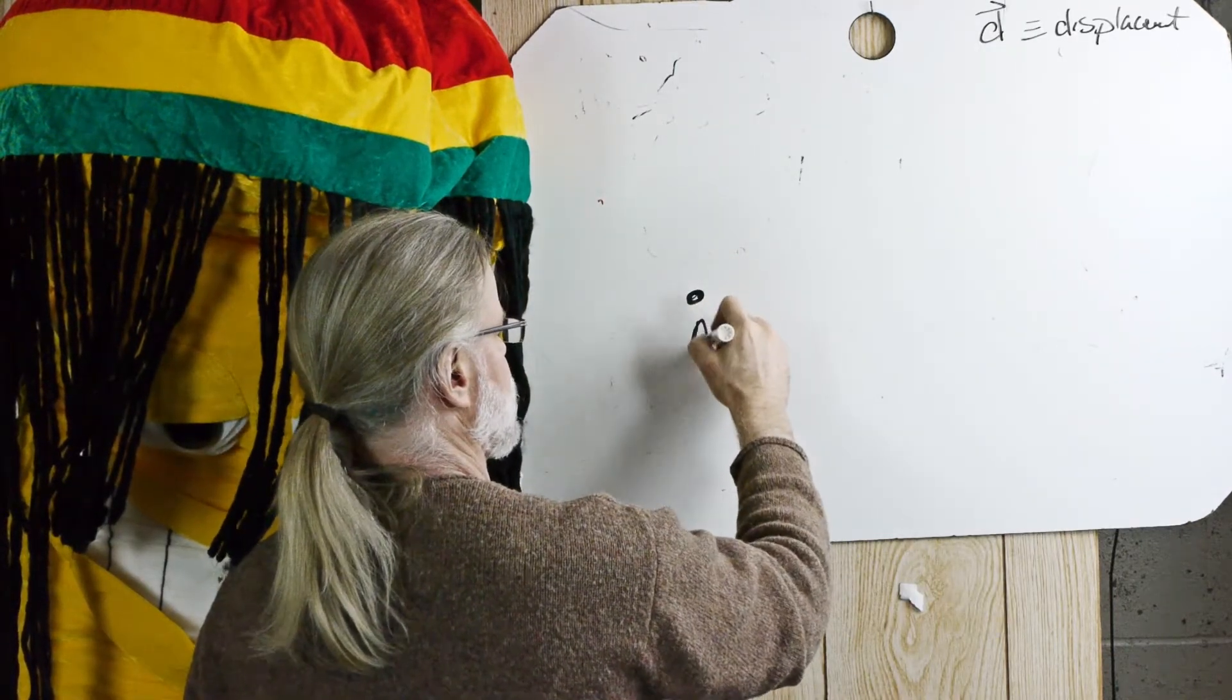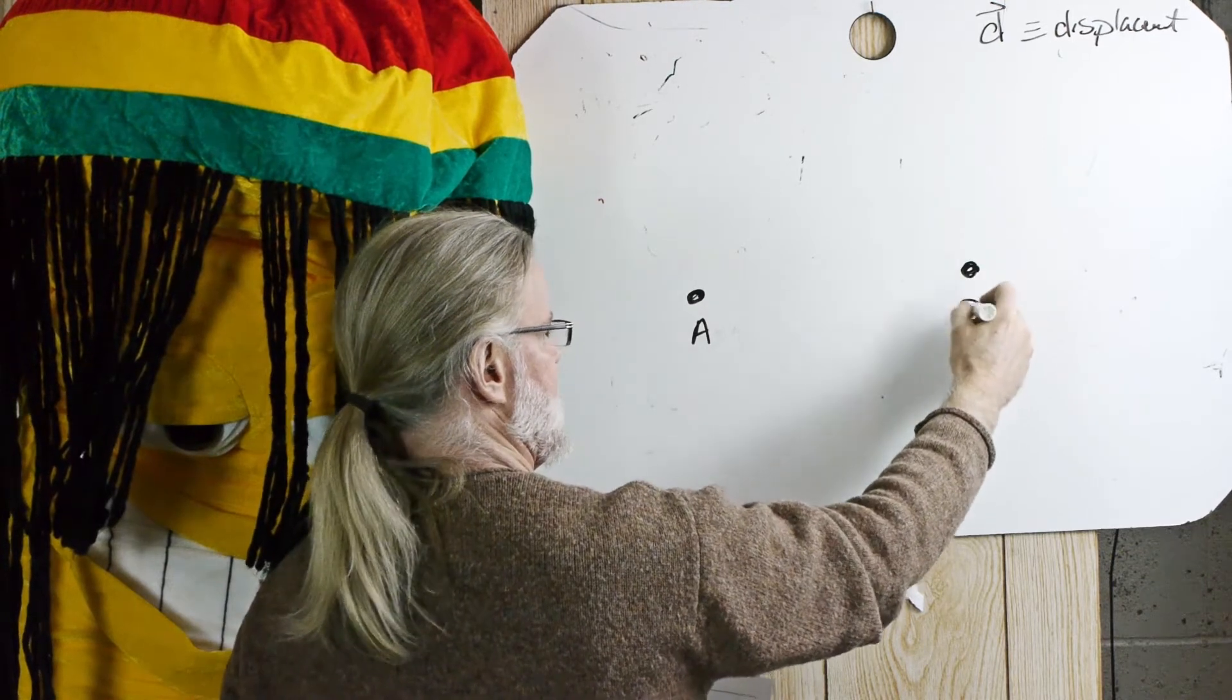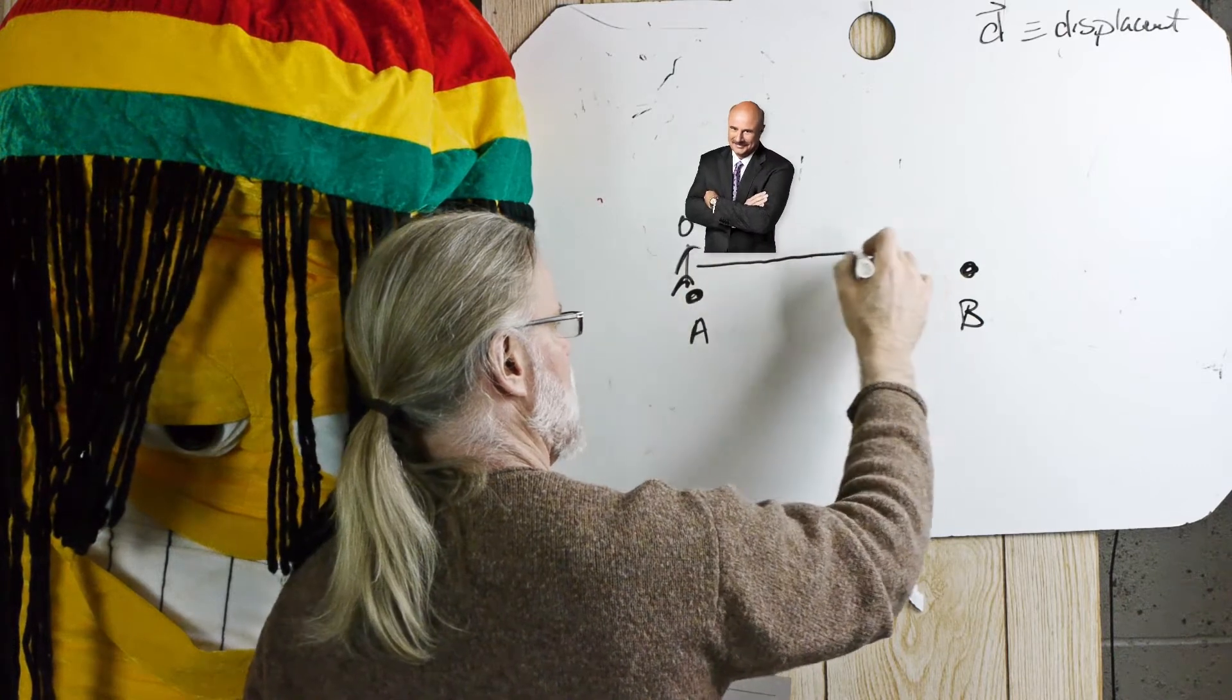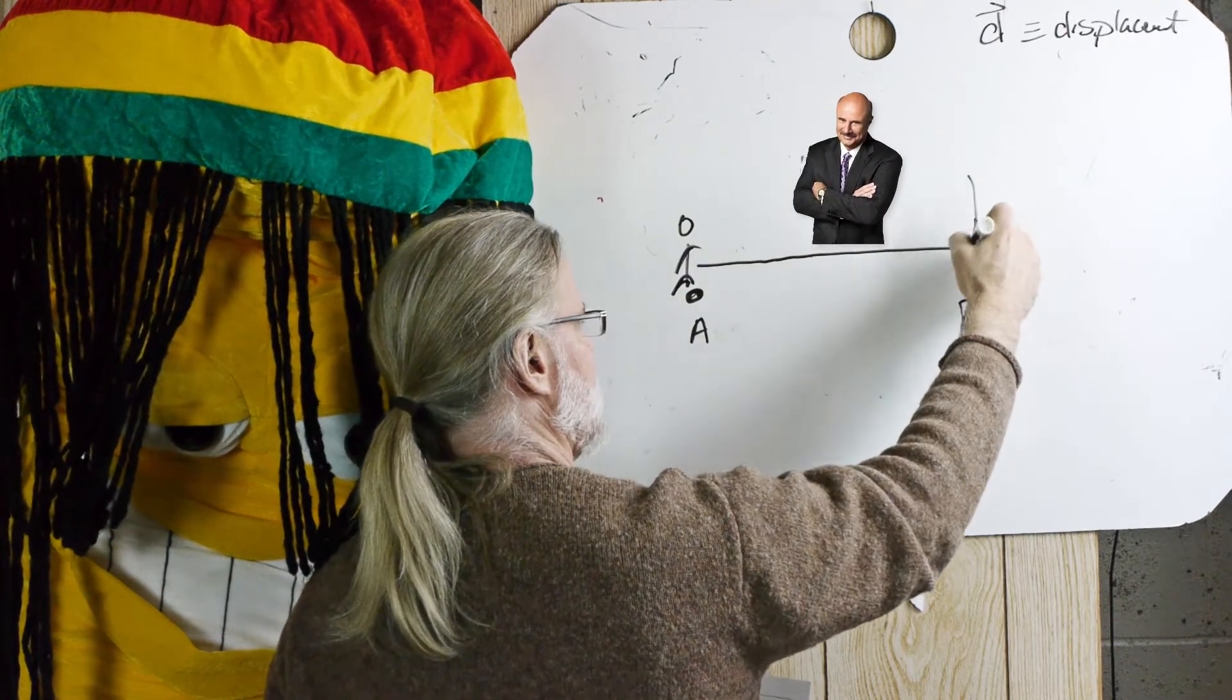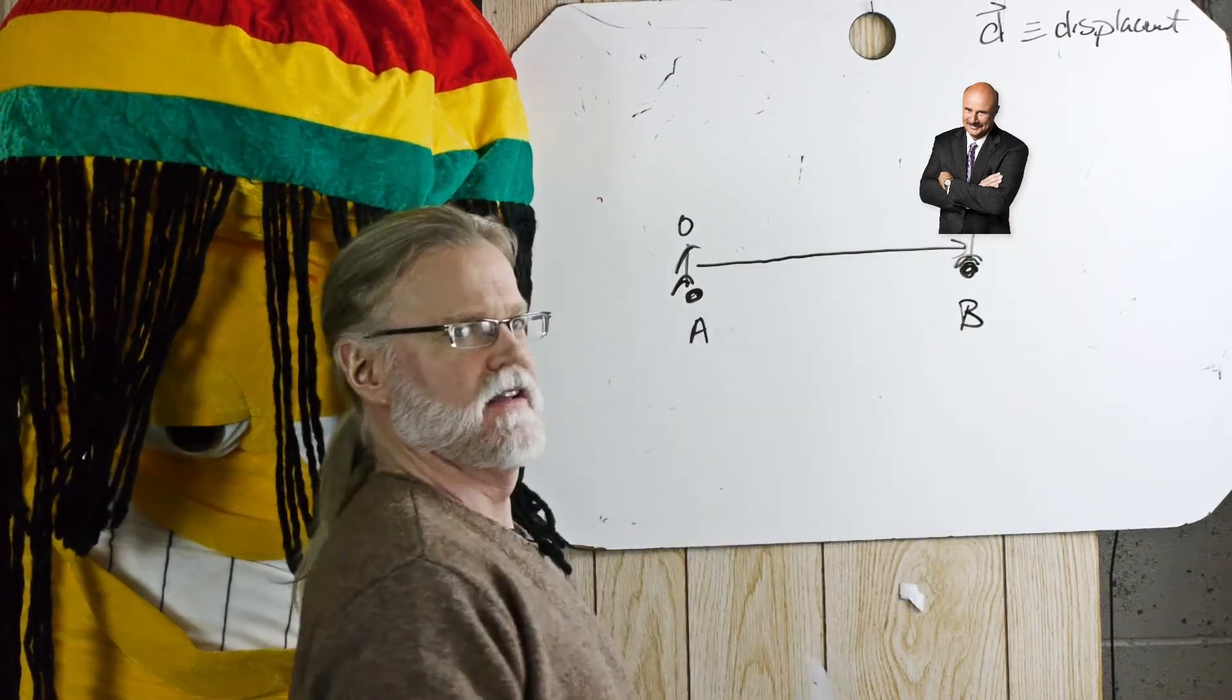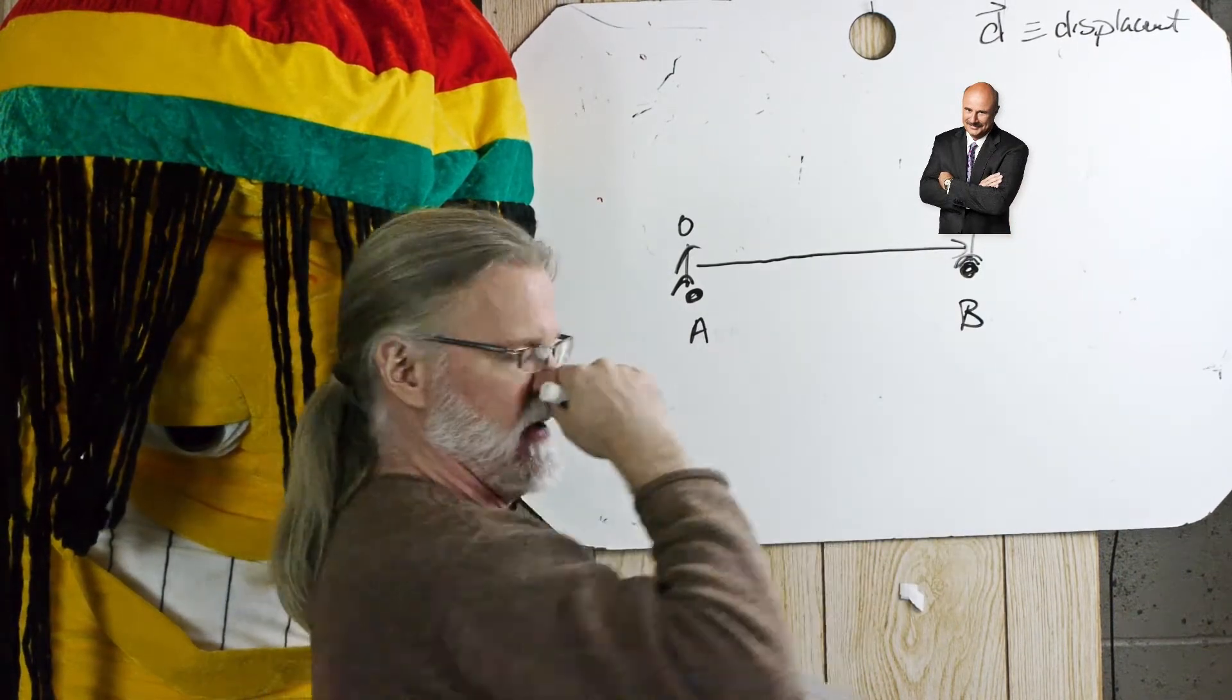Phil goes from A to B. Phil starts here, and Phil walks out over here and ends here. There's Phil. His displacement is from A to B.